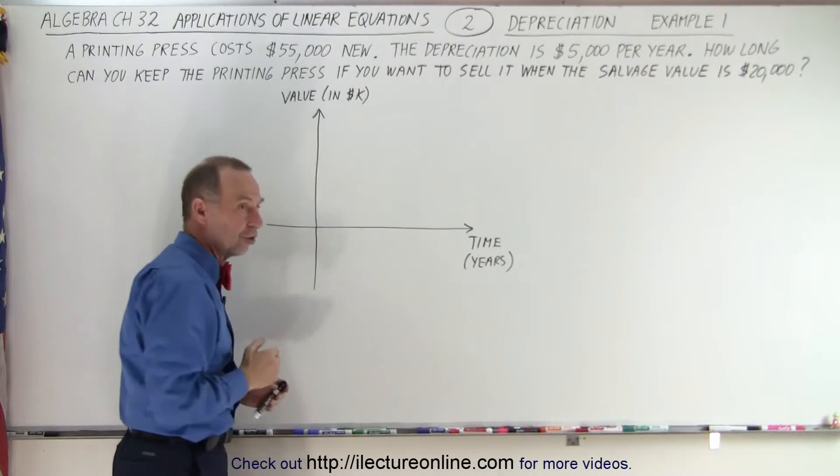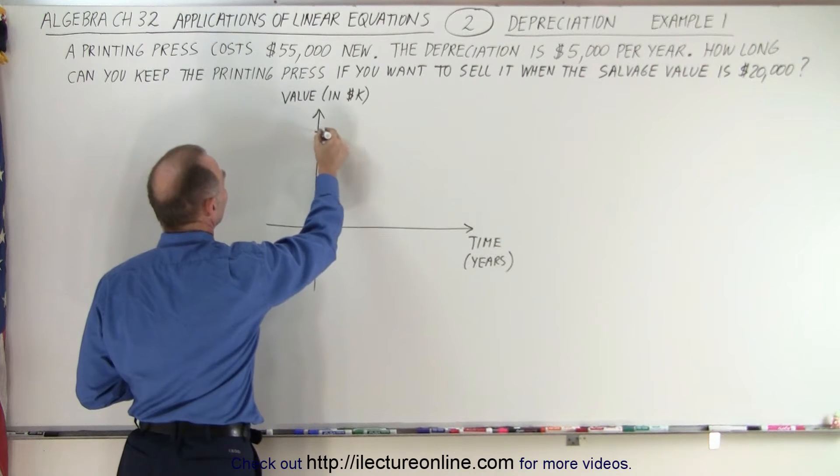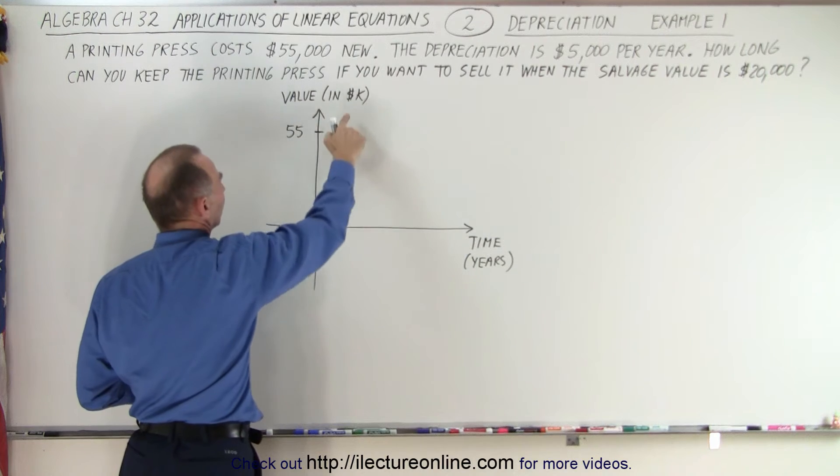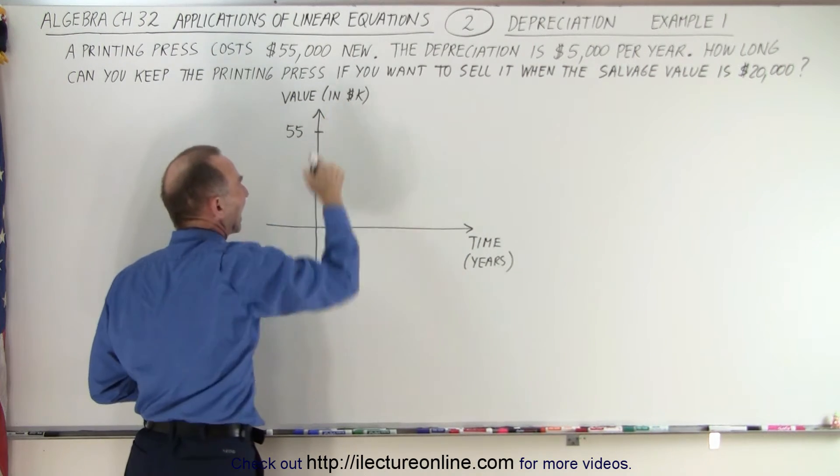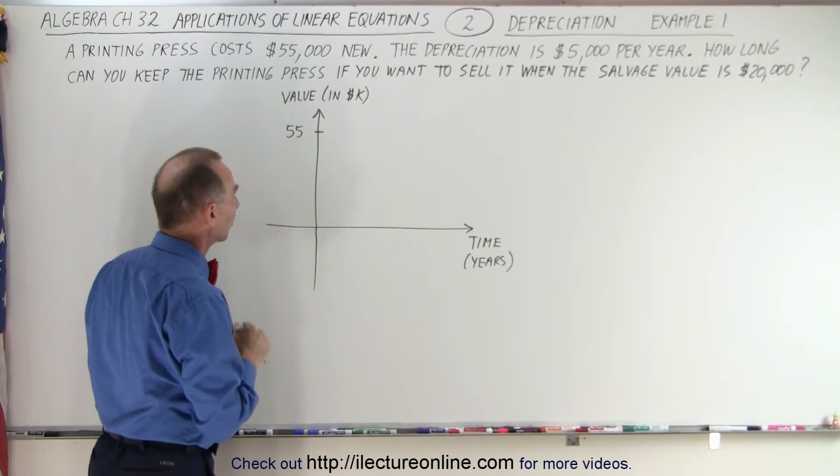So when you purchase it, time will be zero. The purchase price will be $55,000 and that's the value. Notice that the vertical axis is in thousands of dollars. K stands for thousands of dollars. So $55,000 is the purchase price.